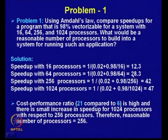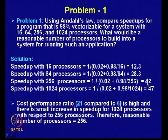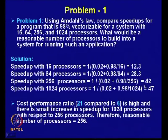For 1024 processors you get only a speed-up of 47 — a very marginal increase from 42 to 47 — while the cost performance ratio rises to 1024/47, which is about 21. Since the increase in speed-up is marginal and cost-performance is increasing significantly when going from 256 to 1024 processors, we conclude that a reasonable number of processors for this application is 256.